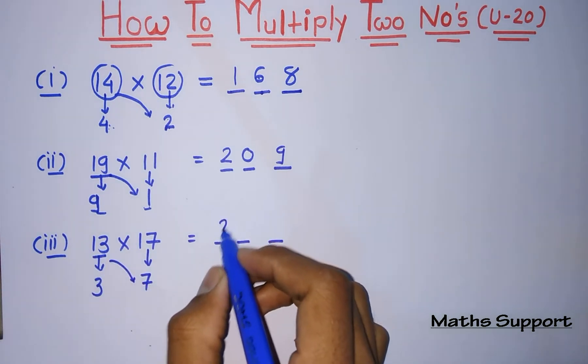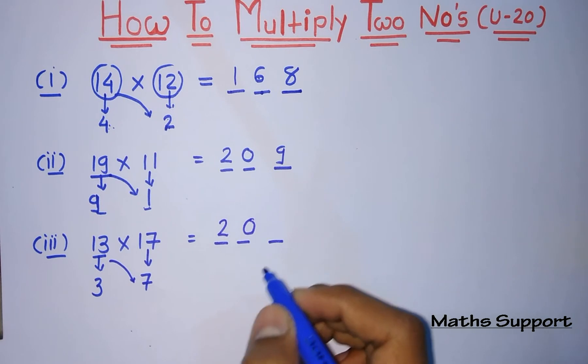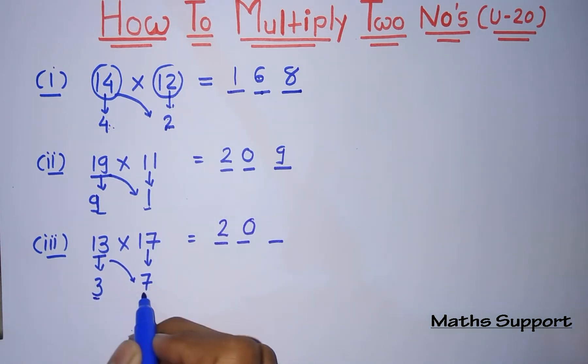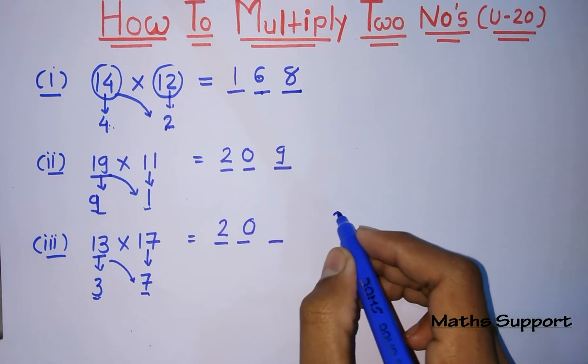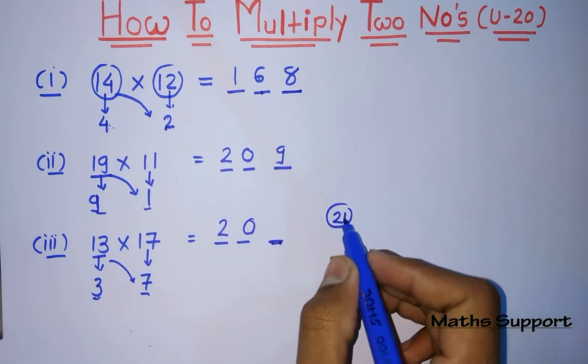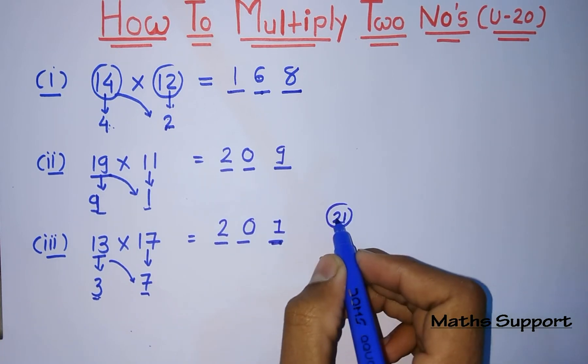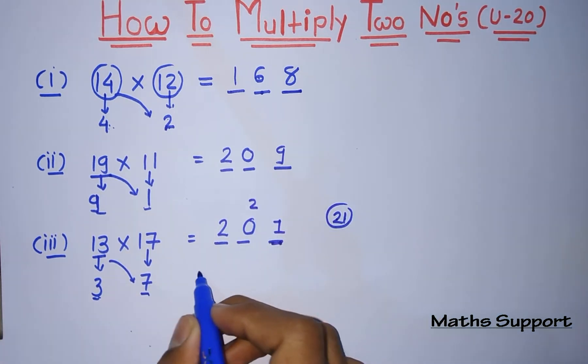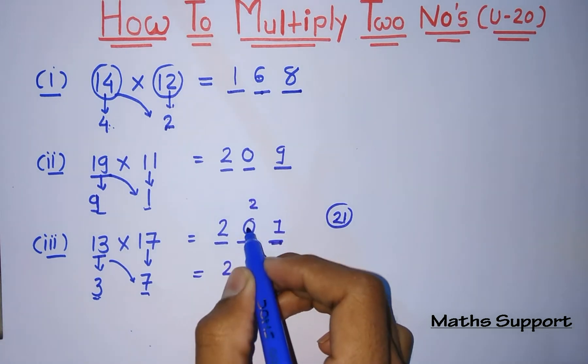And for the last digit, multiply this number 3 into 7. Now multiplication of these 2 numbers is 21, but we need to fill only one digit over here. So put 1 over here and 2 will go to carry. So your final answer will be 20 plus 2, that is 221. This is how when your multiplication exceeds one digit.